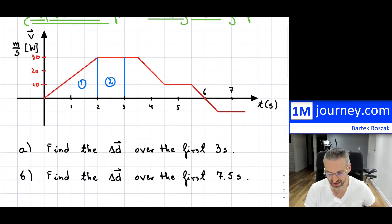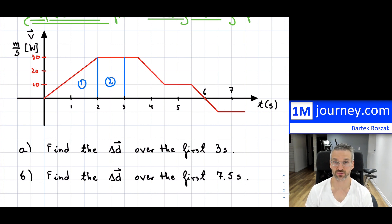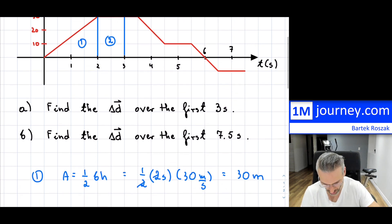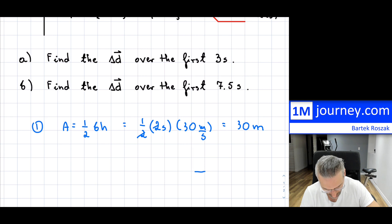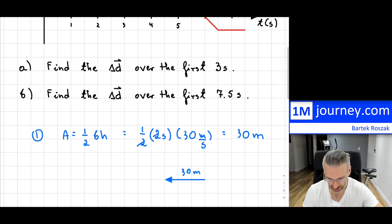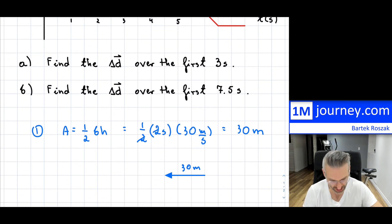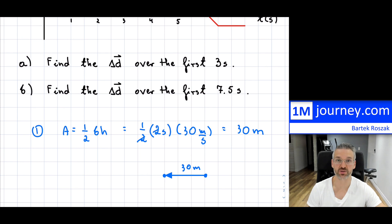Because this is a velocity-time graph, we don't actually know where we're starting off. We know it looks like we're moving in the west direction, but we don't know our initial position. You can't really find positions directly unless someone gives you more information. We do know that we've covered 30 meters in the first two seconds from some starting position — that's why it's just a displacement.